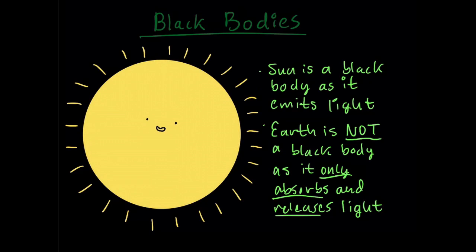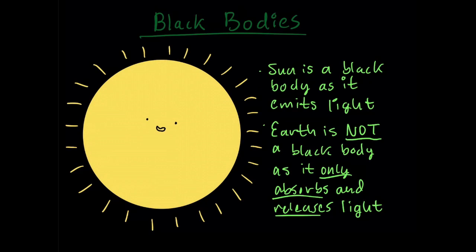Before we can talk about the greenhouse gas theory, I would like to mention black bodies. For example, the sun is a black body as it emits light, while the earth is not a black body as it only absorbs and releases said light.